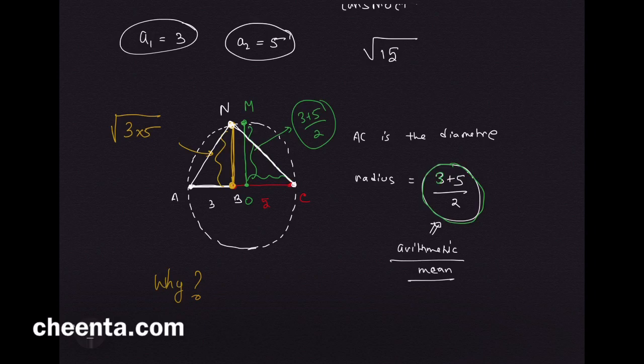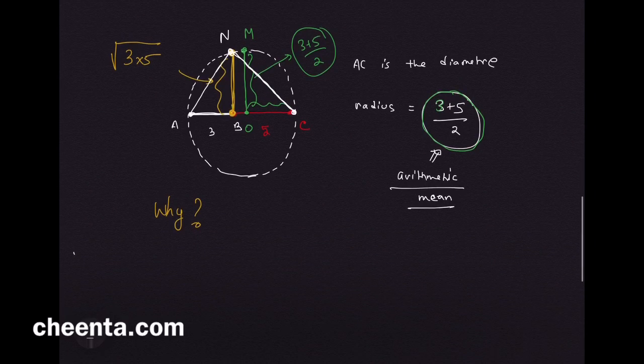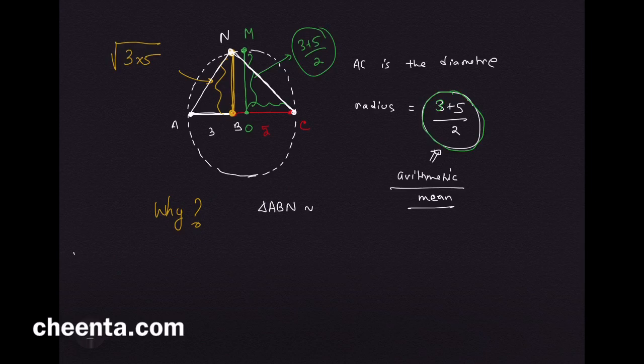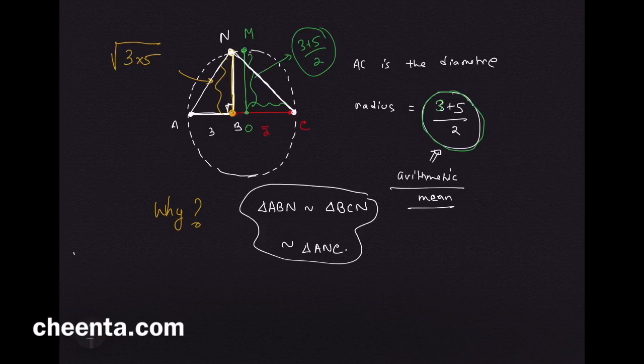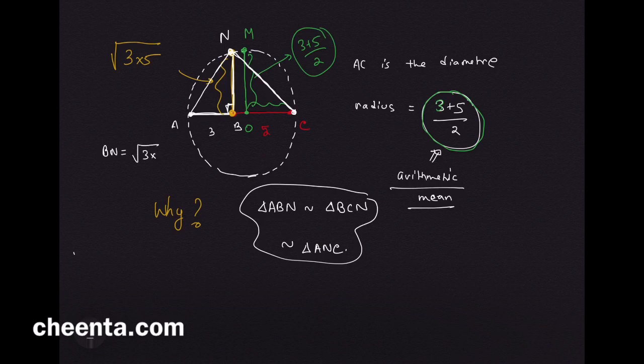Can you show that triangle ABN is similar to triangle BCN and that's similar to triangle ANC? All these three triangles will be similar to each other. It's a very important and well-known result in geometry. Using this result, you can show that BN is indeed square root of 3 times 5.